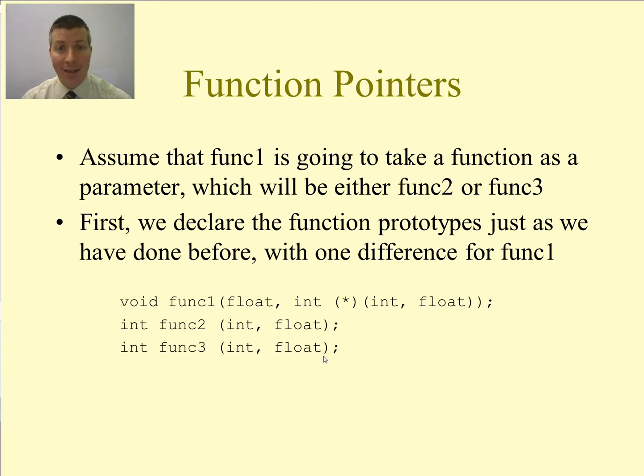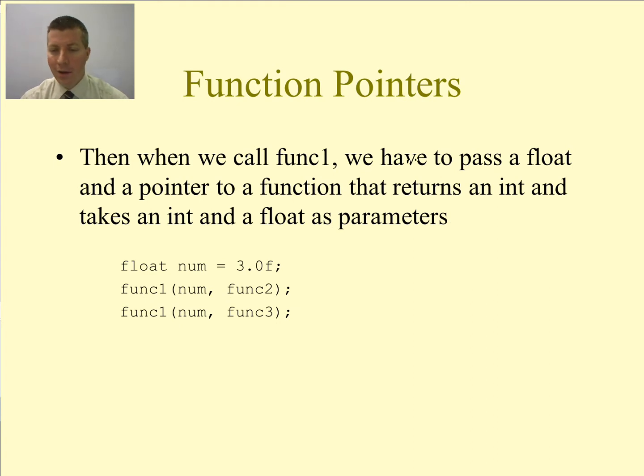You see here now, I have two candidates for that, func2 and func3. Both return ints. They take ints and floats as parameters. When we call func1, we have to pass in a float as the first parameter and then a pointer to a function as the second parameter. And that function has to return an int, take an int, and take a float as parameters. So you see here now that I call func1, I pass a float in as the first parameter. As the second parameter, I'm passing a function in that takes an int and a float as parameters and returns an int back to me. I just saw my prototype on the previous slide that func2 and func3 both work to do that for me.